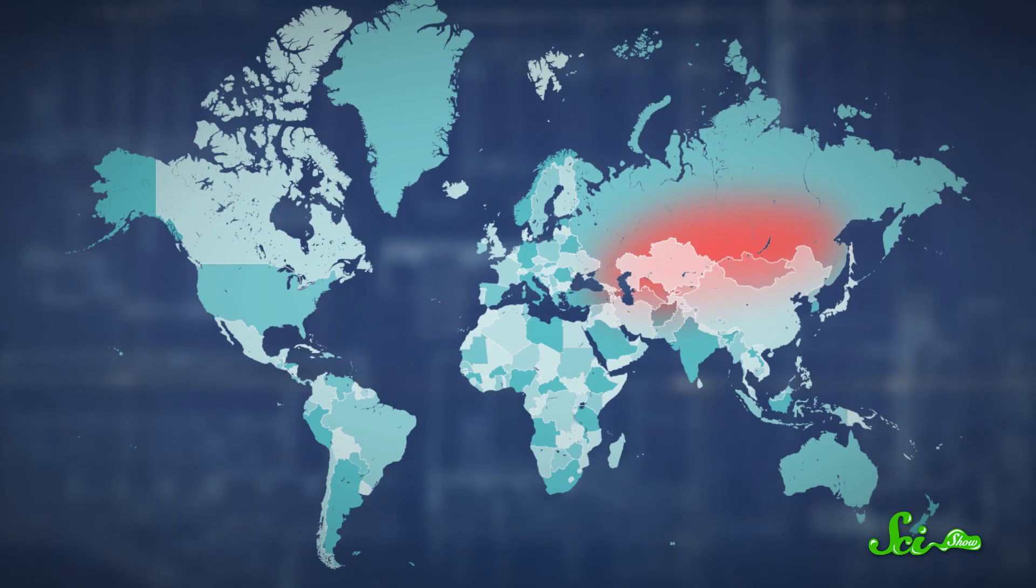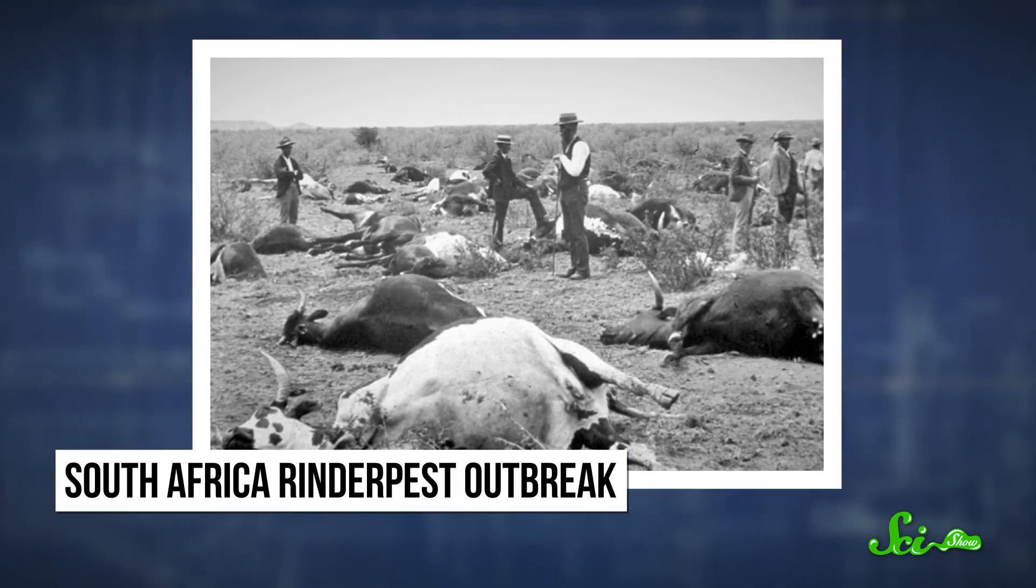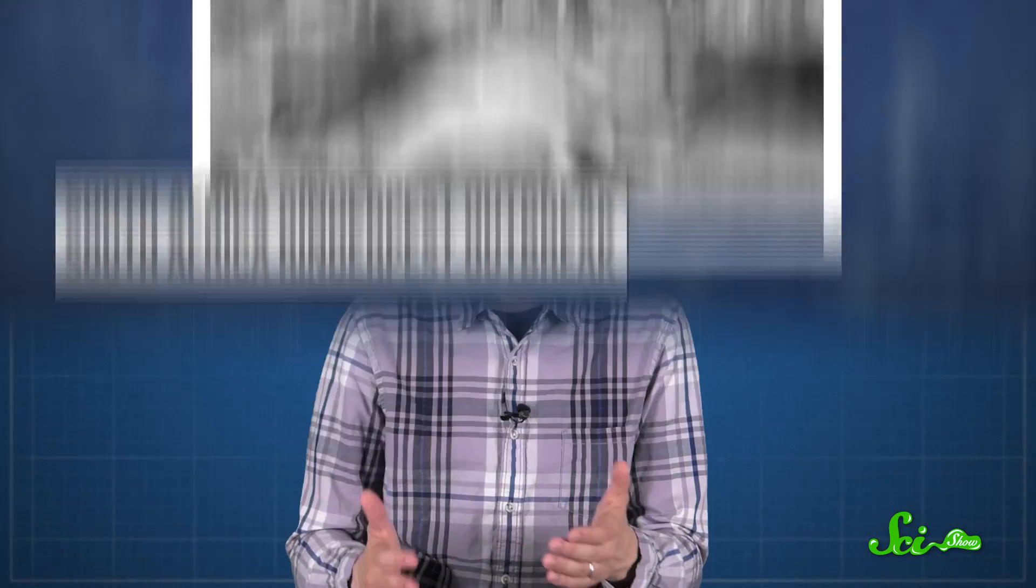Originally from Asia, Rinderpest slowly moved into Europe, and then became an epidemic in Africa in the 1880s. In Ethiopia, Rinderpest wiped out a third of the human population by killing the animals they depended on for food and transport. And it didn't go away.